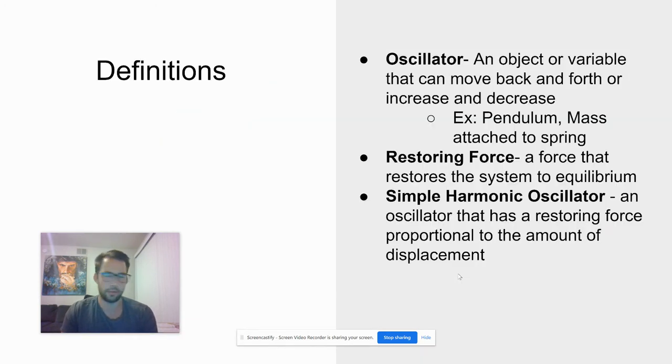Here's some other definitions I want you to go ahead and write down. An oscillator is anything that moves back and forth or increases or decreases. So a wave is an oscillator because it increases and decreases. It goes back and forth. The pendulum swings back and forth. That's an example of an oscillator. A mass on a spring, if I pull a mass that's attached to a spring, it's going to go back and forth.